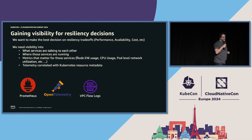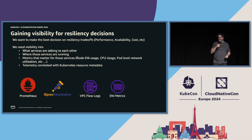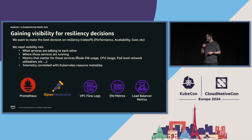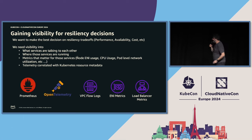I can look at VPC flow logs — great, I get a good understanding of what packets are flying through the network. But VPC flow logs have nothing to do with Kubernetes; I don't know what IP address is associated with the frontend or backend service. ENI metrics cover IP address allocation but not what I really need. Load balancer metrics are separate — no idea what Kubernetes pods, namespaces, or services are involved. This gets me some good data, but we can do better.